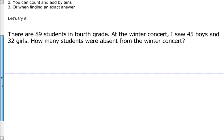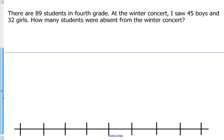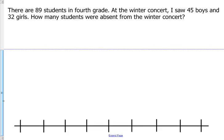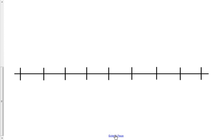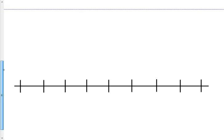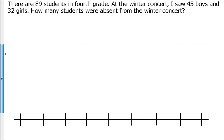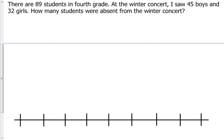We're going to try it with this word problem. I made it a little tricky today because it's a multi-step word problem. It says: There are 89 students in fourth grade. At the winter concert I saw 45 boys and 32 girls. How many students were absent from the winter concert?